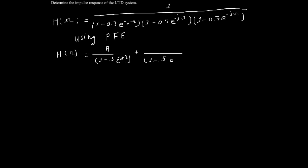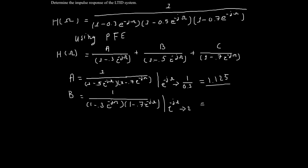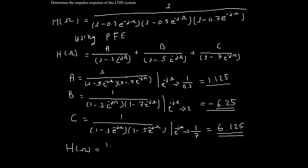with each fraction having as its denominator one of the poles shown in the original transfer function. Determining the coefficients for each fraction, we find that a equals 1.125, b equals negative 6.25, and c equals 6.125.